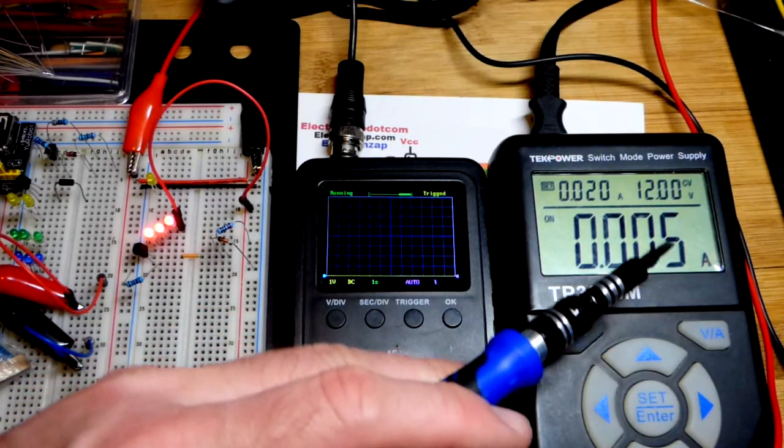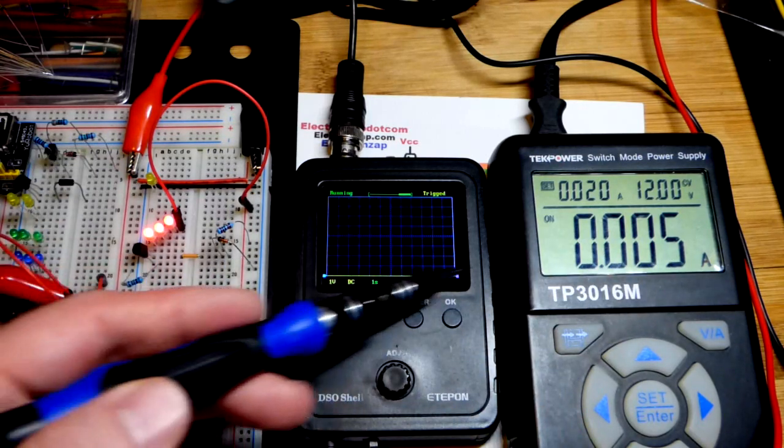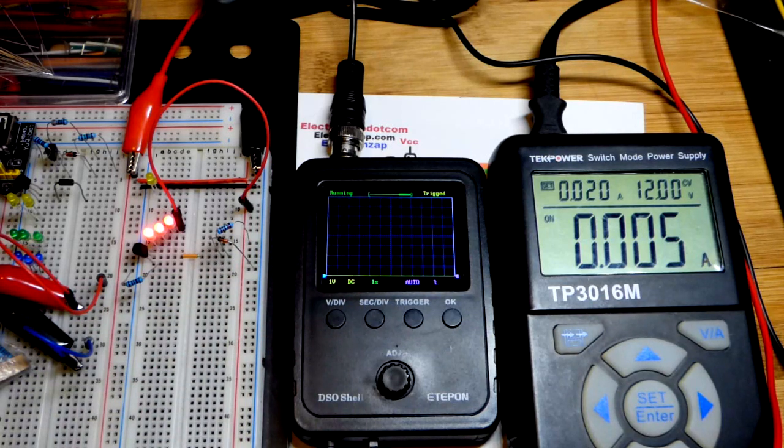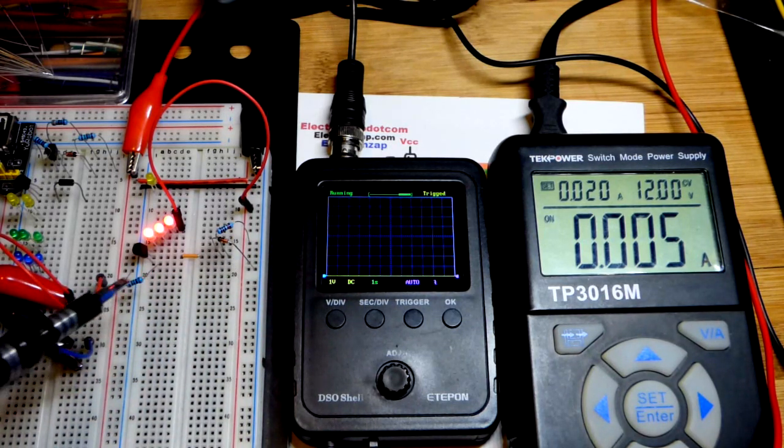So now we zoom back, we can see the power supply there. You can see we got that 5 milliamps that I mentioned before, or 0.005 amps. And that's the voltage across the resistor, 5 volts, divided by 1,000.